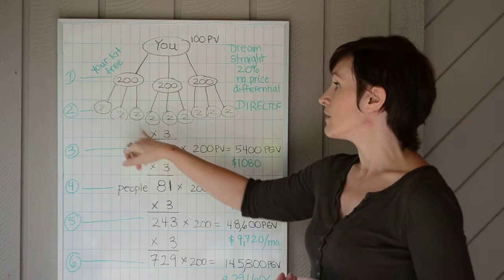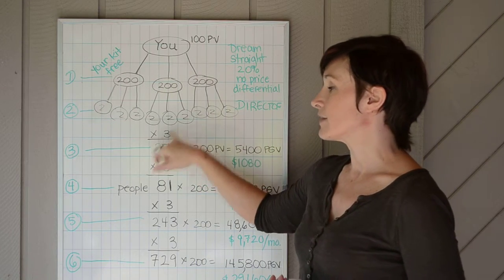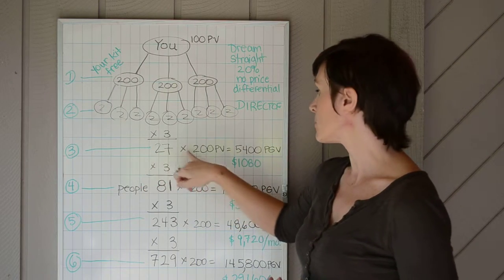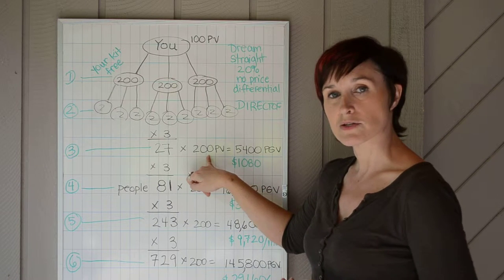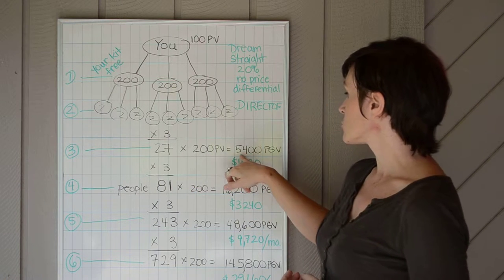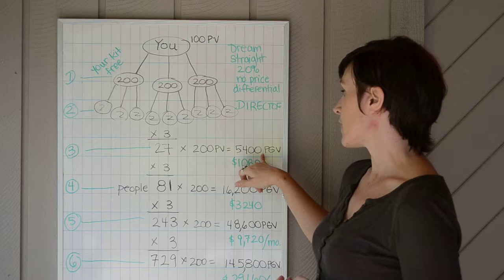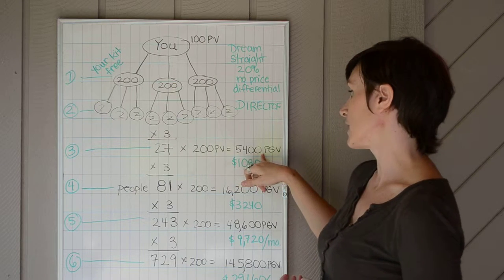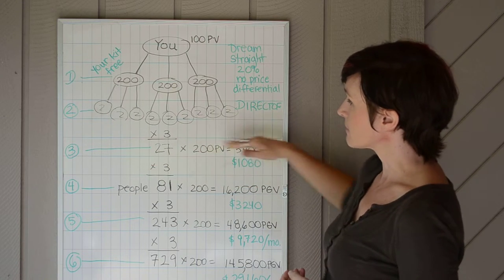Take it another level. Help these nine people find their three. You have 27 people. 200 PV is the turnaround kit. And your PGV would be $5,400 for the month. And that's just counting the bottom level.